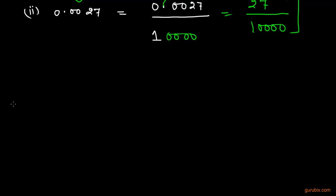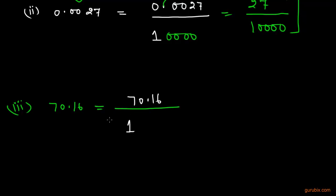Now we shall move to the third part, which is 70.16, and we shall convert this number into P by Q form. First we write 70.16 in the numerator and 1 in the denominator. We count the digits in the decimal part — there are 2 digits. So we write two zeros here and remove the decimal point, giving us 7,016 over 100.